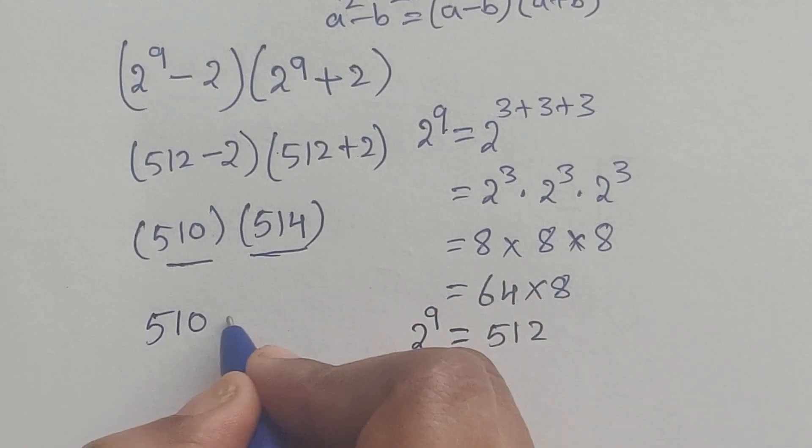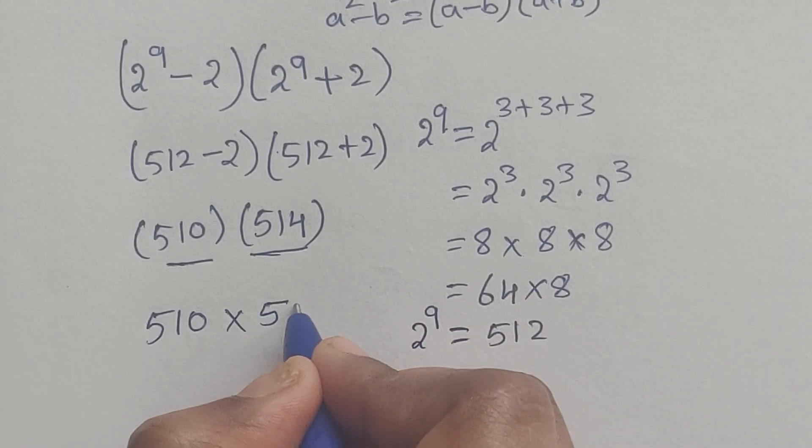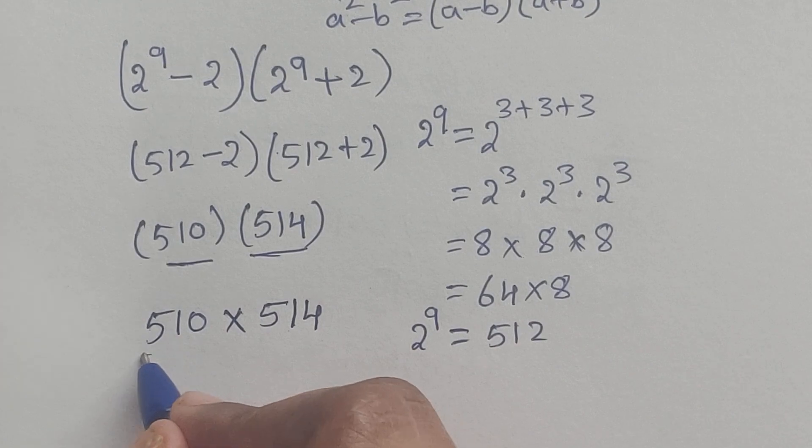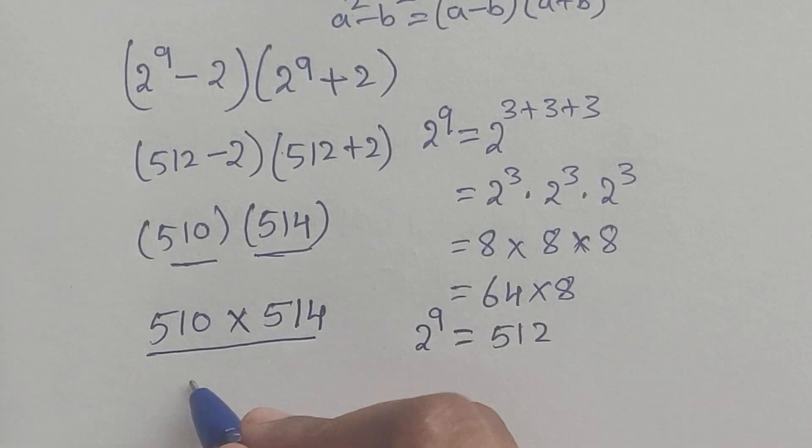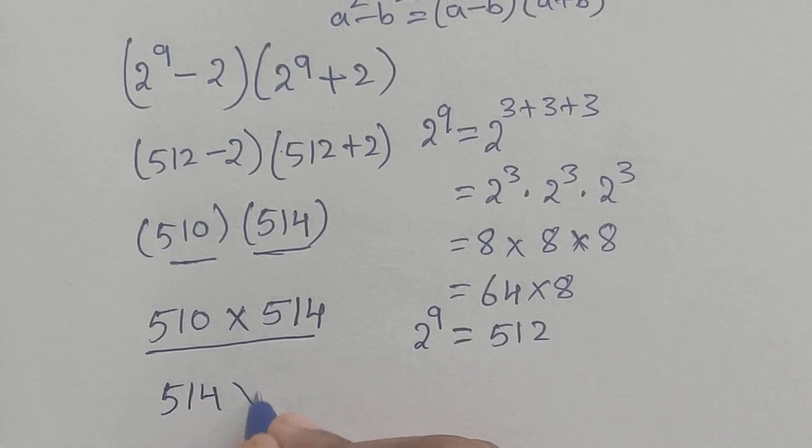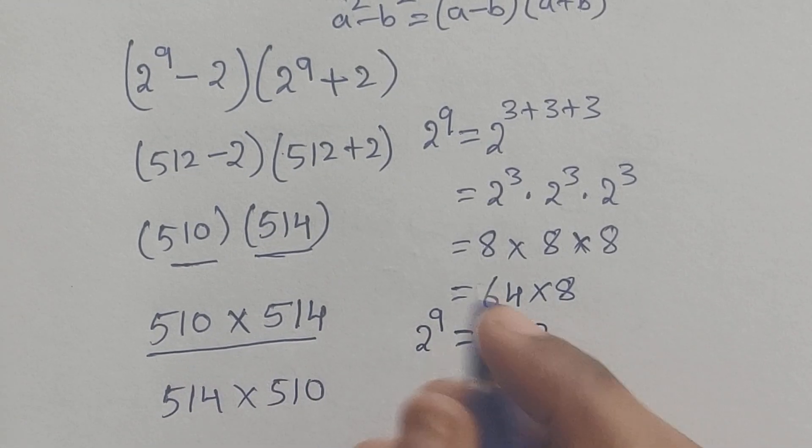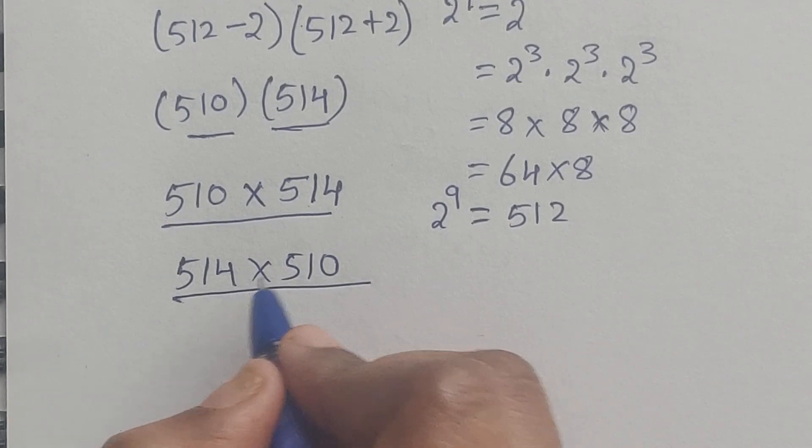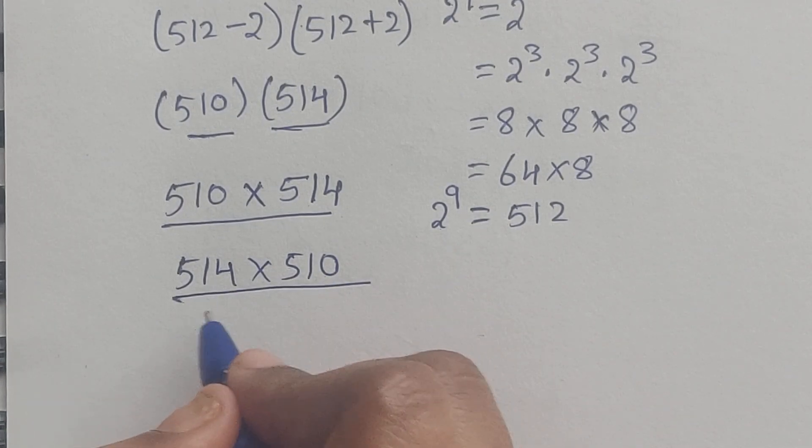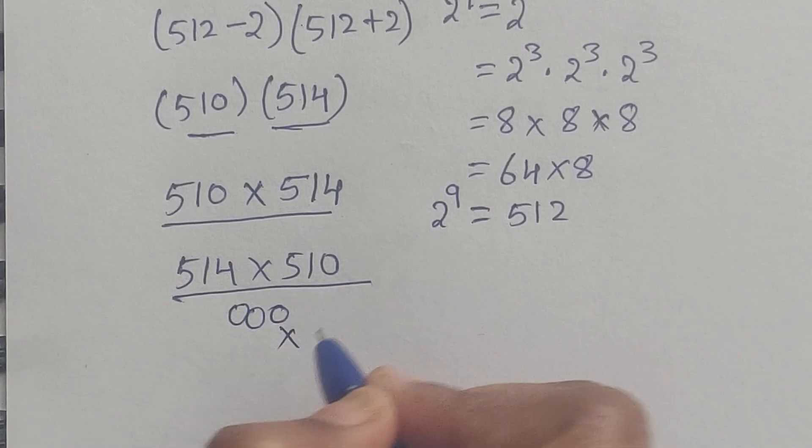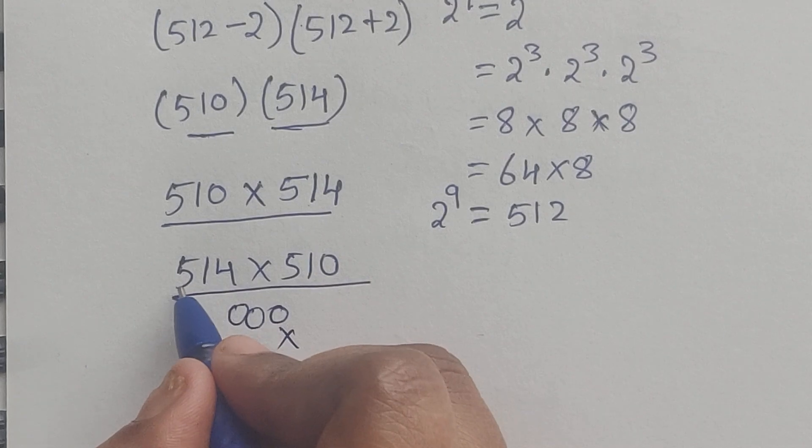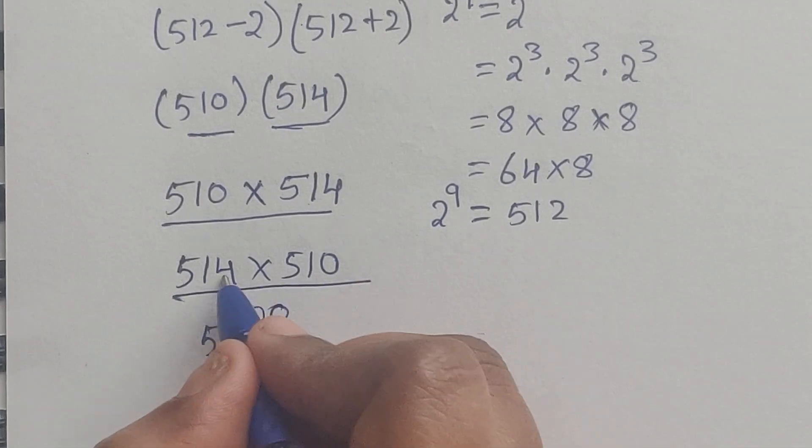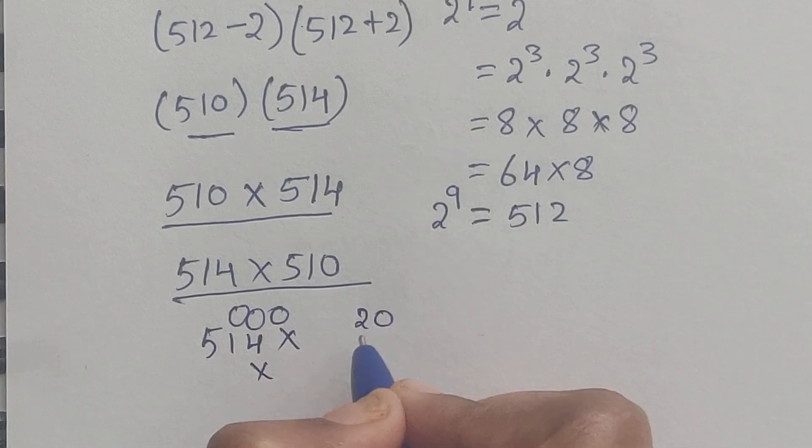So 510 times 514... we can write this as 514 times 510. 510 times 4 is 2040. Then 1 times 514 is 514, and 514 times 5...